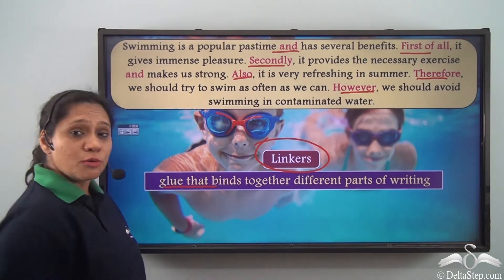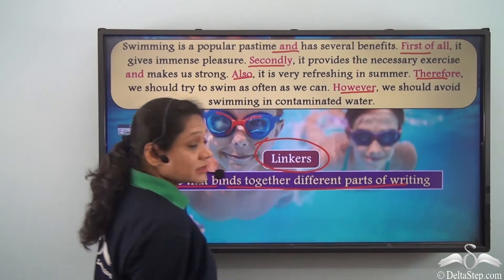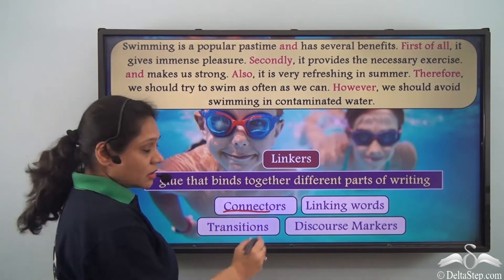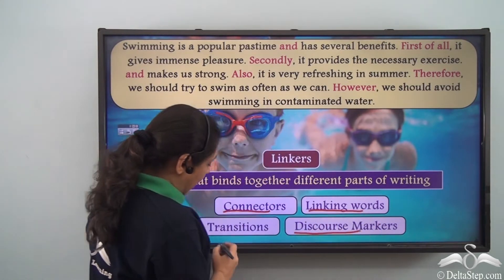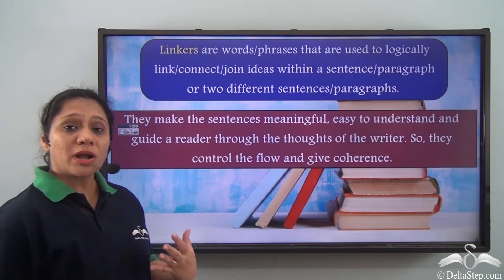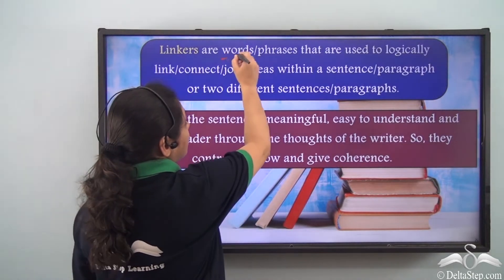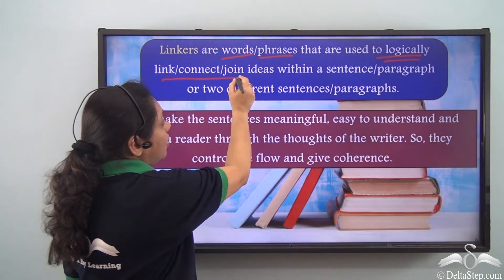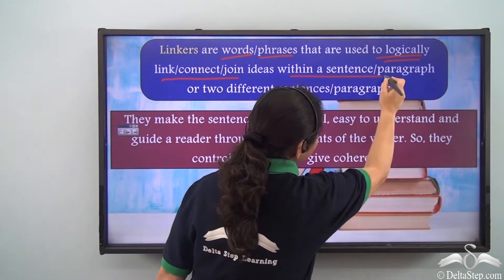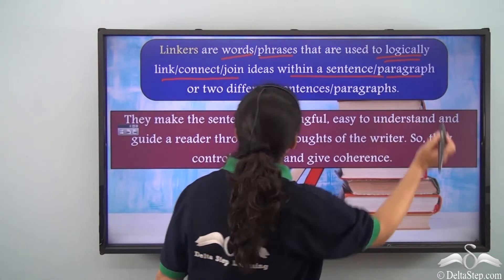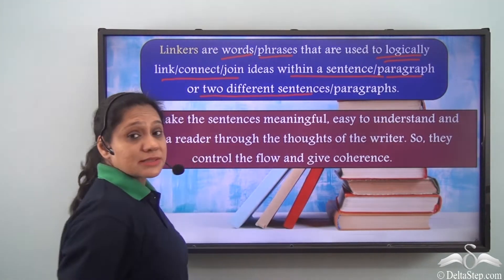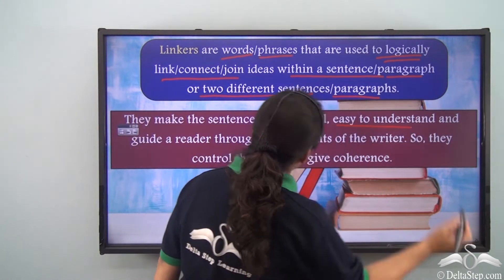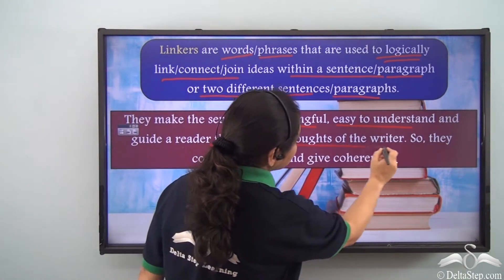Linkers behave like the glue that binds together different parts of writing. Linkers can also be known as connectors, linking words, discourse markers, or transitions. Linkers are words or phrases that are used to logically link, connect, or join ideas either within a sentence or within a paragraph, or between two different sentences or paragraphs. They make the sentences meaningful and easy to understand, and guide a reader through the thoughts of the writer.